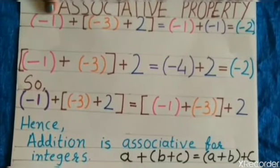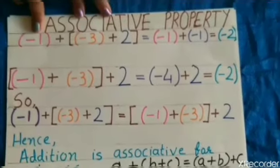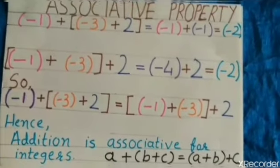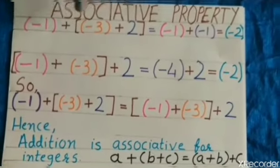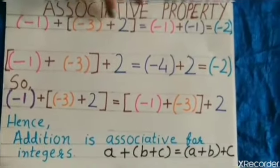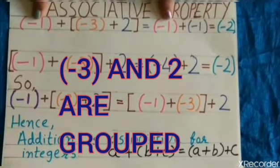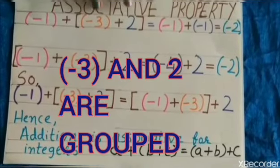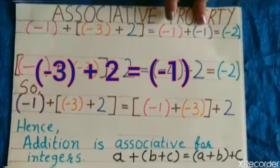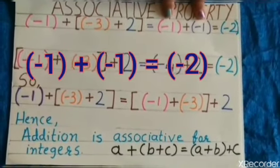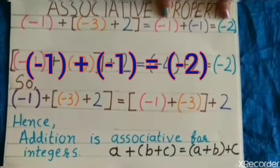Here, there are 3 integers: minus 1, minus 3 and 2. Now, I want to add. So, minus 3 and 2 are grouped. So, minus 1 is as it is and the addition of minus 3 and 2 that is minus 1. And again, the addition of minus 1 and minus 1, answer is minus 2.